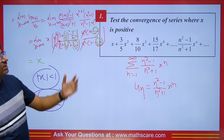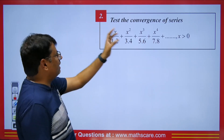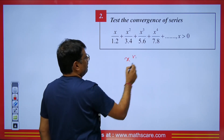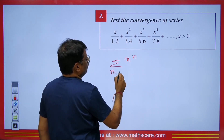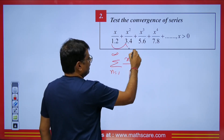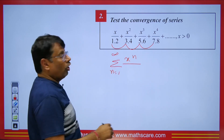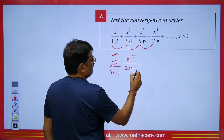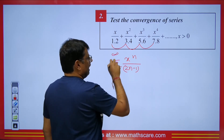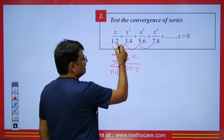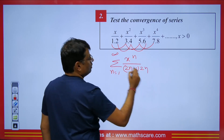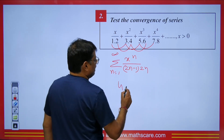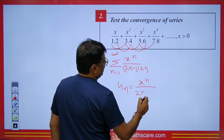So this series is convergent between minus 1 and 1. Next question: test the convergence of the series x + x²/(1·3) + x³/(1·3·5) + ... The sequence of denominators is 1, 3, 5, ... — odd terms — which we write as 2n-1. The next factor is even: 2n. So the nth term is u_n = x^n / (2n(2n-1)).